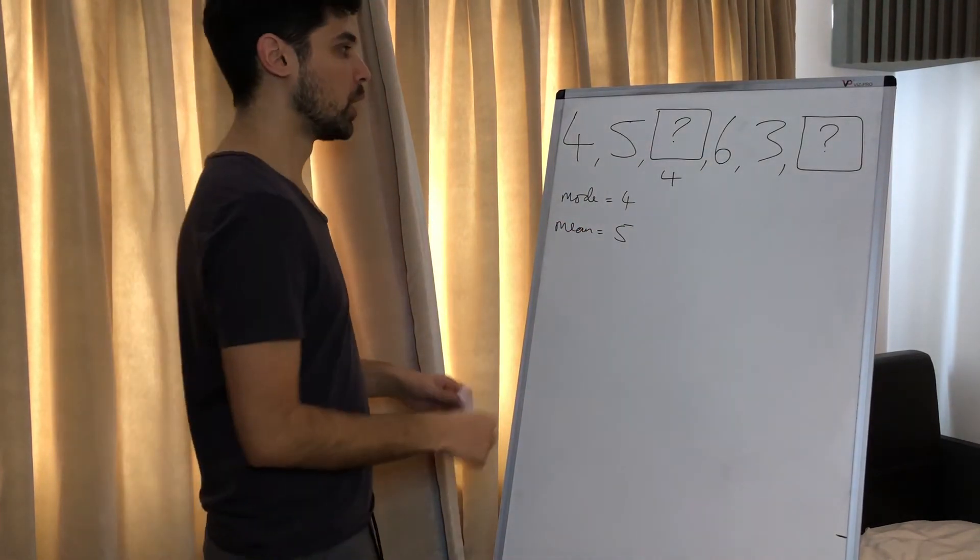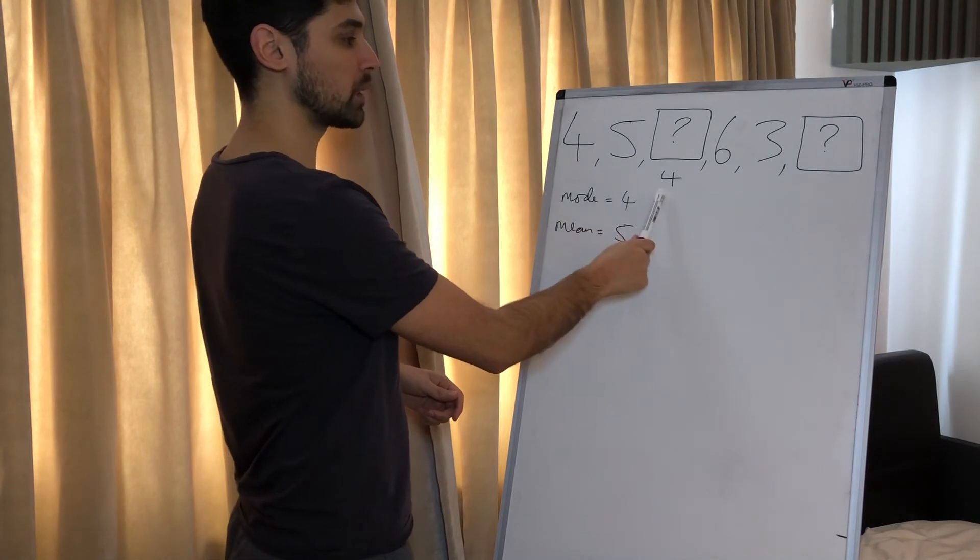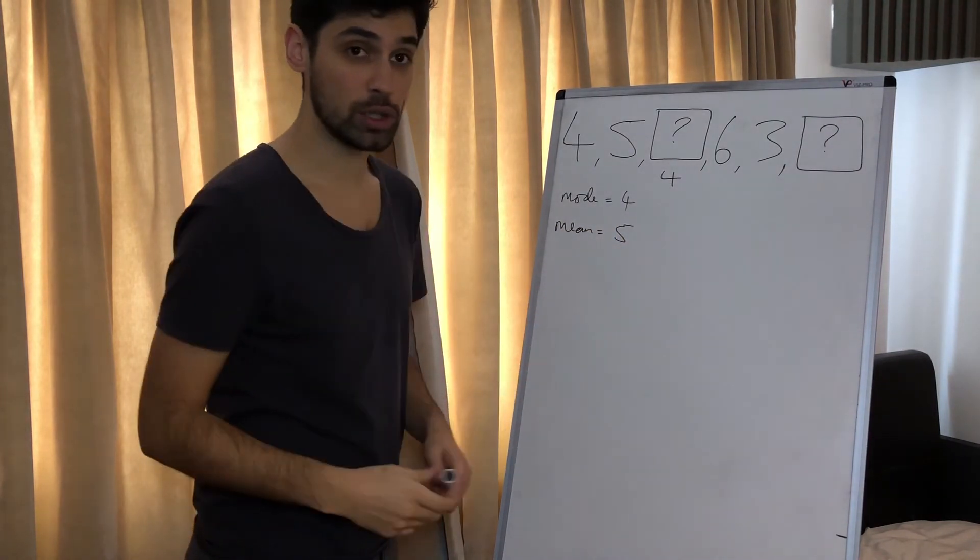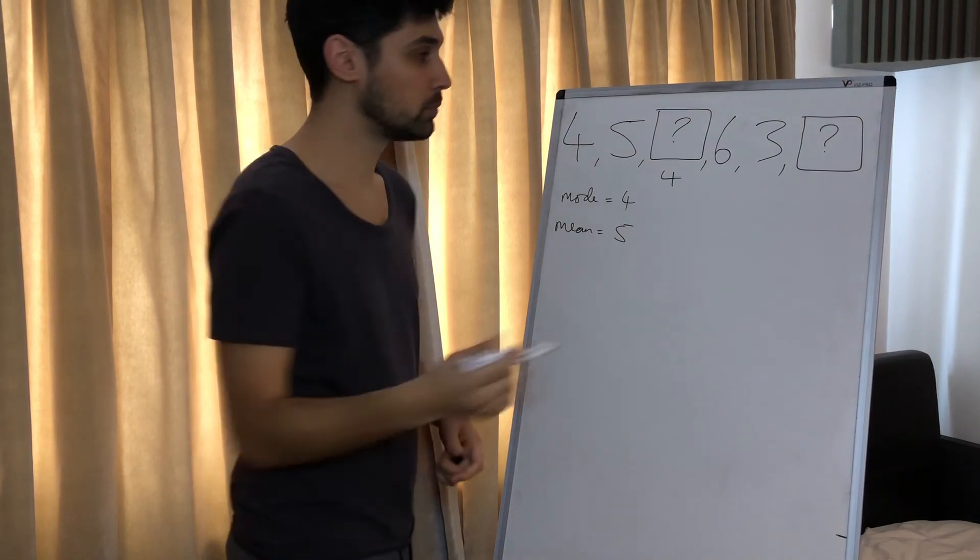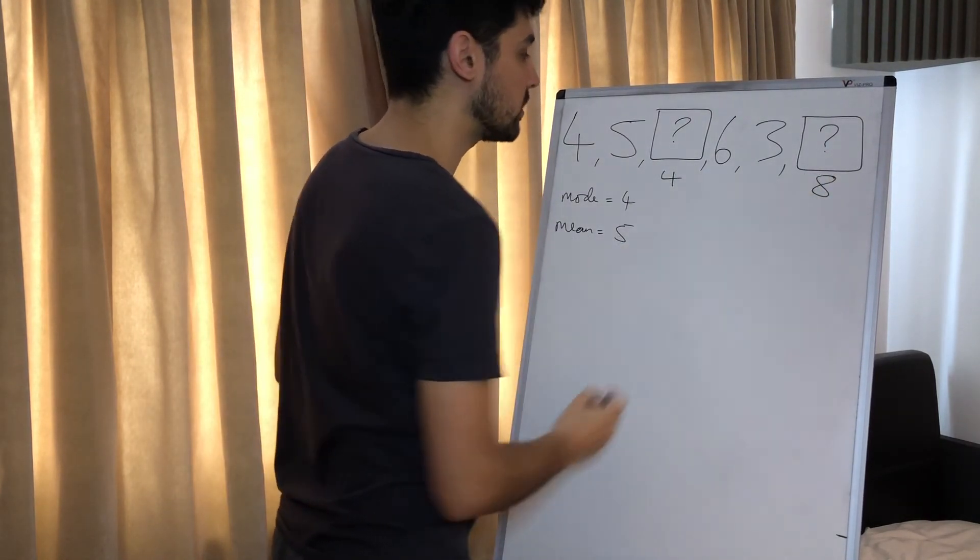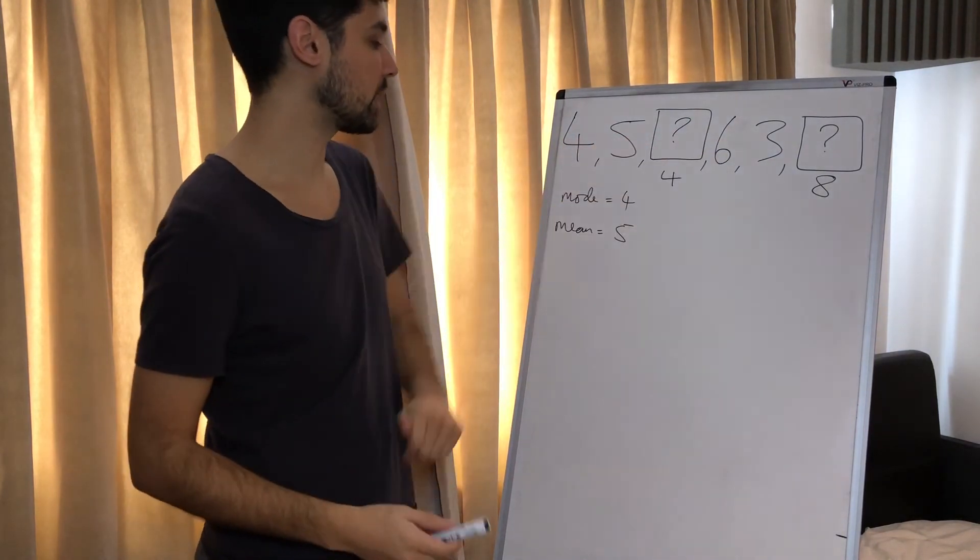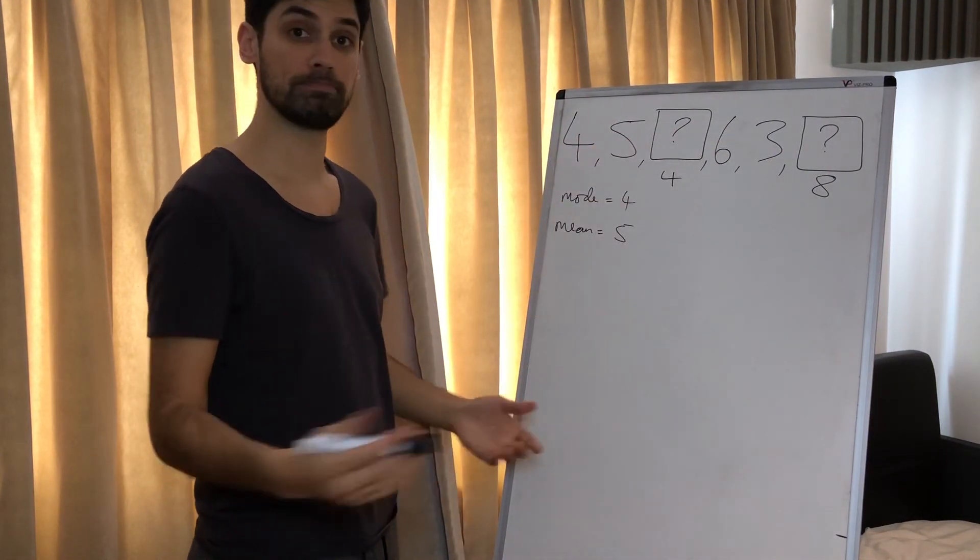So what do they add up to at the moment? Well, four plus five is nine, plus four is thirteen, plus six is nineteen, plus three is twenty-two. So to get to thirty, we need another eight. So when we add these numbers together and divide by six, we get five, and that's it.